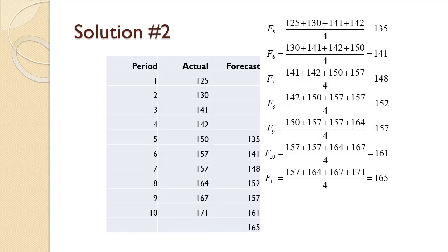F5 equals 125 plus 130 plus 141 plus 142 divided by four equals 135. F6 equals 130 plus 141 plus 142 plus 150 divided by four equals 141. F7 equals 141 plus 142 plus 150 plus 157 divided by four equals 148. F8 equals 142 plus 150 plus 157 plus 157 divided by four equals 152. F9 equals 150 plus 157 plus 157 plus 164 divided by four equals 157. F10 equals 157 plus 157 plus 164 plus 167 divided by four equals 161. F11 equals 157 plus 164 plus 167 plus 171 divided by four equals 165.